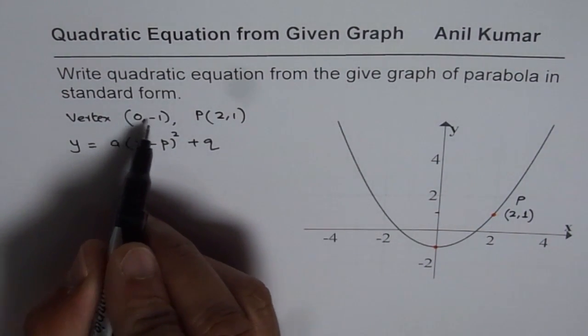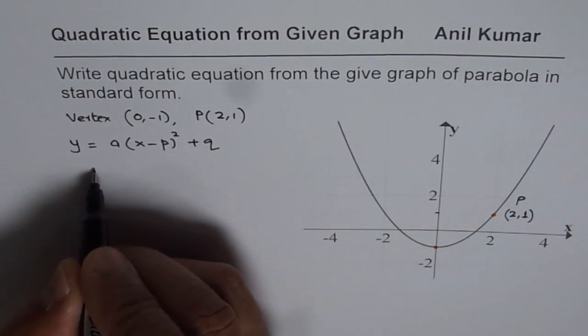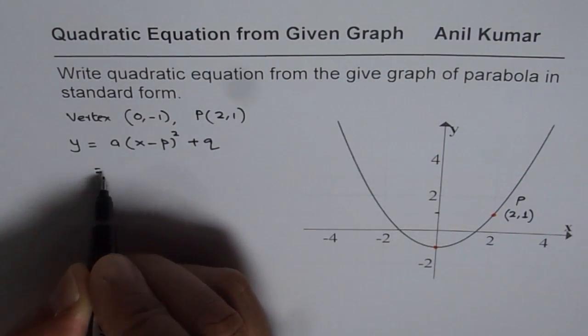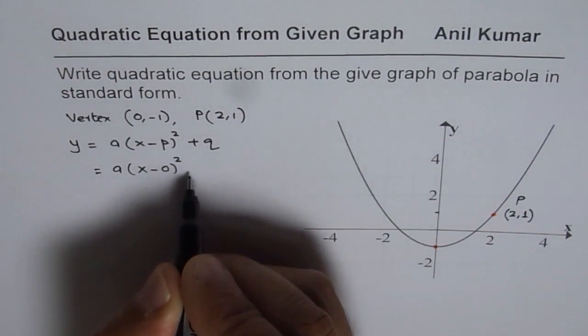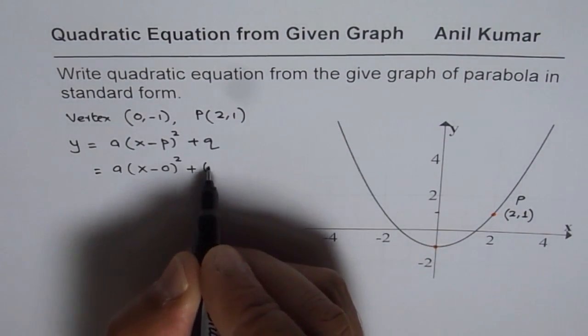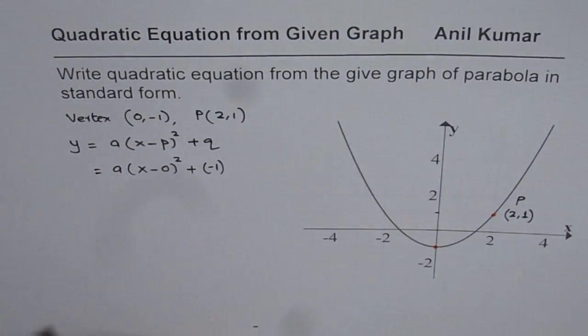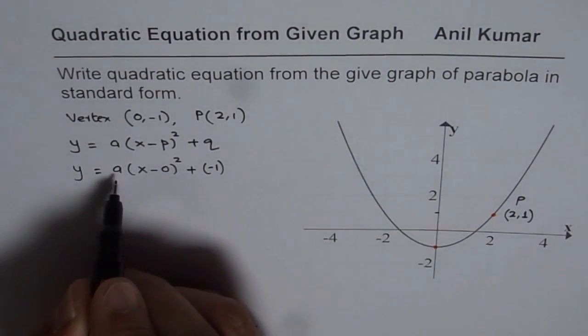Let's substitute 0 and -1 for p and q respectively. So we get y = a(x - 0)² + (-1). Now in this equation we need to find the value of a.